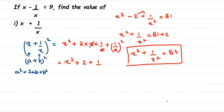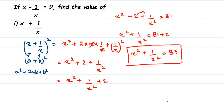In the second term, x and x cancel, giving plus 2. The third term 1 by x whole square is 1 by x square. So x plus 1 by x whole square equals x square plus 1 by x square plus 2. Now, earlier in this question I found that x square plus 1 by x square is equal to 83. I'm going to substitute that value here: in place of x square plus 1 by x square I put 83.